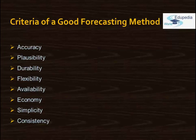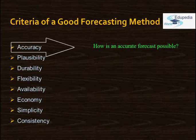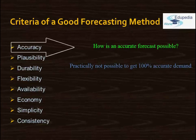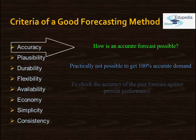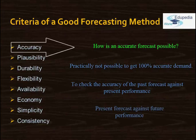Looking at the first criterion — accuracy — the forecast obtained must be accurate. It is practically not possible to get 100% accurate demand. To obtain an accurate forecast, it is essential to check the accuracy of past forecasts against present performance and of present forecasts against future performance. Accuracy cannot be tested by precise measurement but by judgment.